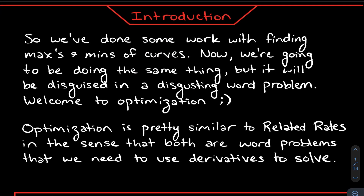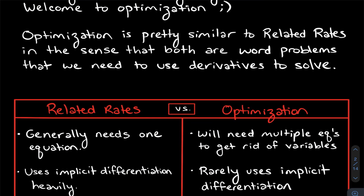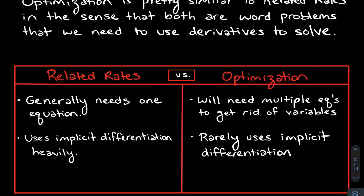Optimization basically boils down to finding maxes and mins — that's really all it is. But it's disguised in a word problem where you have to get a visual for what's going on, and I think that's the hardest part. Once you have that, it just boils down to a maximum or minimum problem. It's similar to related rates — a word problem that requires calculus to solve. Let's compare the two.